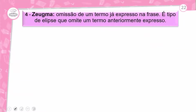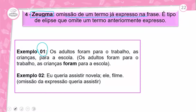Próxima figura de construção: zeugma. Omissão de um termo já expresso na frase — é tipo de elipse que omite um termo anteriormente expresso. Exemplo 1: 'Os adultos foram para o trabalho e as crianças para a escola' — ou seja, 'as crianças foram para a escola', o verbo 'foram' foi omitido. Outro exemplo: 'Eu queria assistir novela e ele filme' — omissão do verbo 'assistir' para não ficar repetitivo.